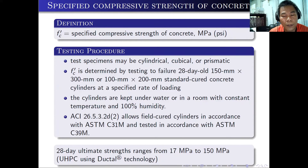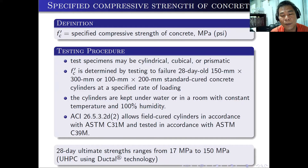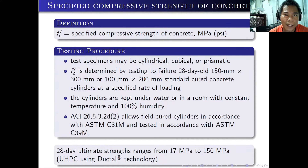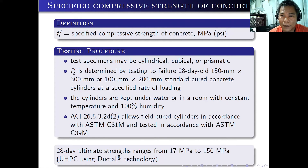Note that there is also what we call ultra-high performance concrete — we call it the Ductal technology. At 28 days, the ultimate strength ranges from 17 MPa to as high as 150 MPa. The concrete is actually a high-tech material because if you just mix it normally, you will get 17 to 20 MPa. Or if you have some knowledge, you will reach around 24 MPa. But to reach 100 to 150 MPa, you need to play with the ingredients.